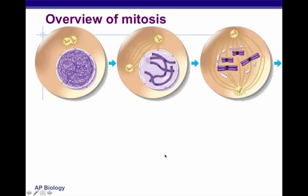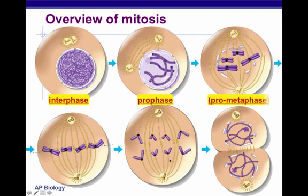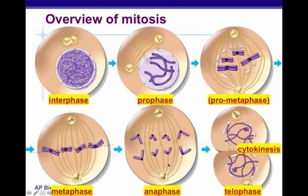An overview of mitosis: we have six different phases, starting off with interphase, then prophase, then prometaphase, metaphase, then anaphase, and then telophase. And then cytokinesis is the final step.